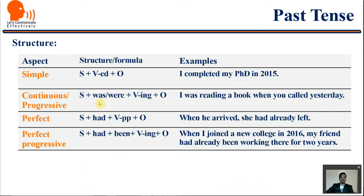For past continuous or progressive: subject plus was/were plus verb-ing. Instead of am/is/are, it becomes was/were — I was, we were, you were, he/she/it was, they were. For example: 'I was reading a book when you called yesterday.'